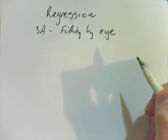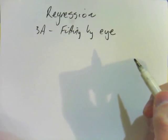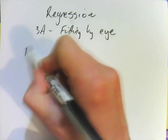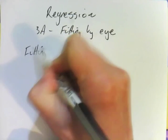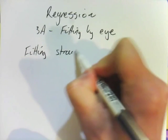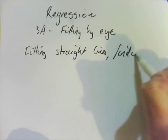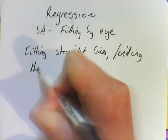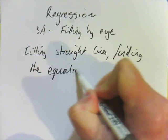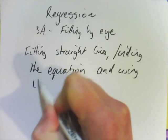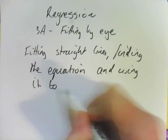So what are we fitting by eye and what is this whole thing about regression all about? Regression is about fitting straight lines, finding the equation and using it to predict.